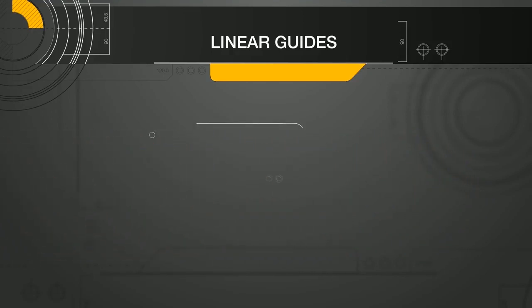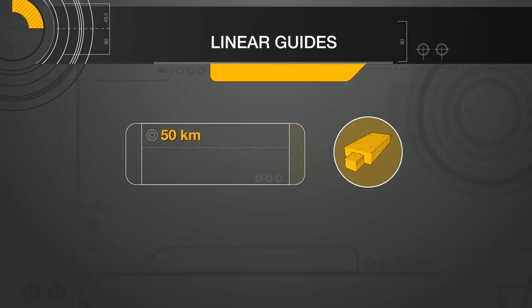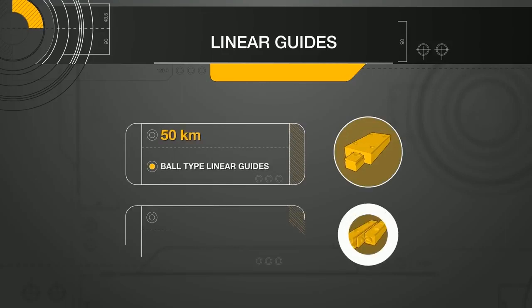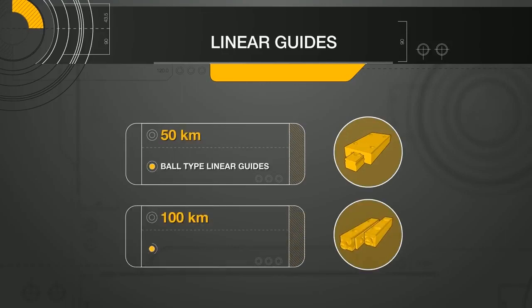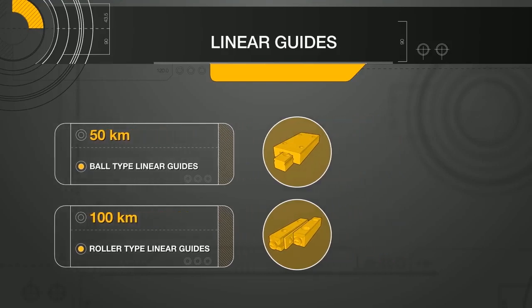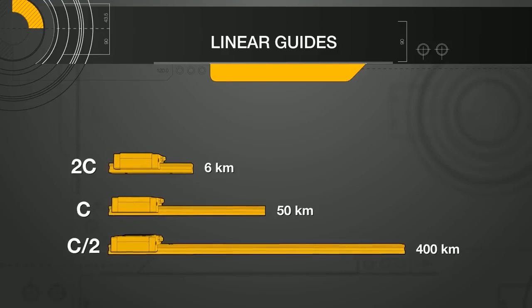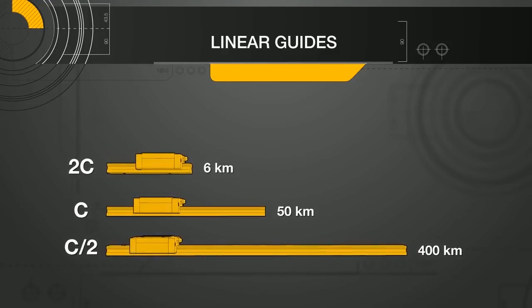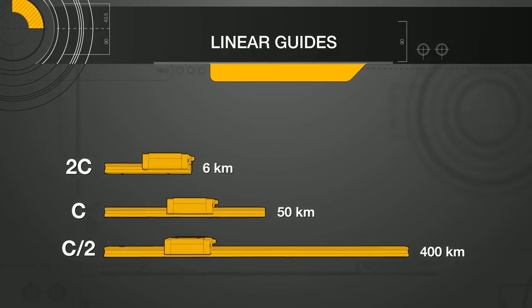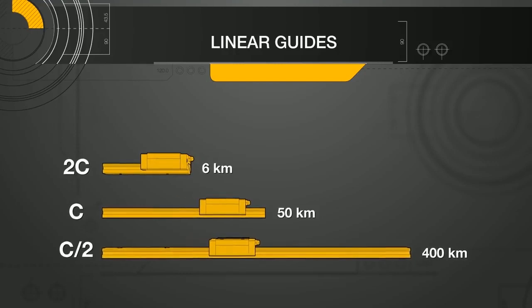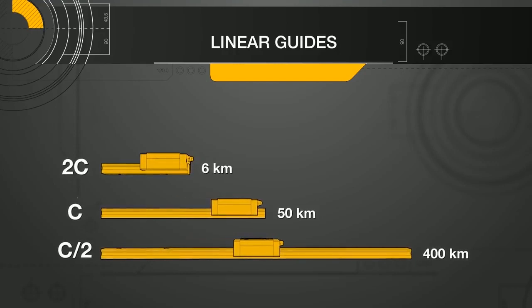This travel distance is typically defined as 50 kilometers for ball-type linear guides and 100 kilometers for roller-type guides. However, this may vary by manufacturing region, so the designer should verify with the manufacturer when comparing linear guides. In simpler terms, the basic dynamic load rating can be thought of as giving a benchmark for the expected life of a linear guide under a particular load, C.